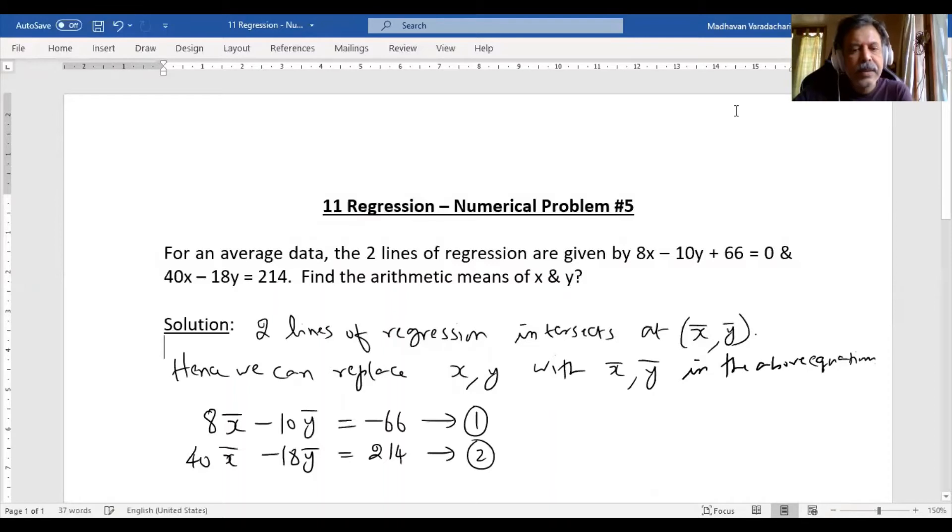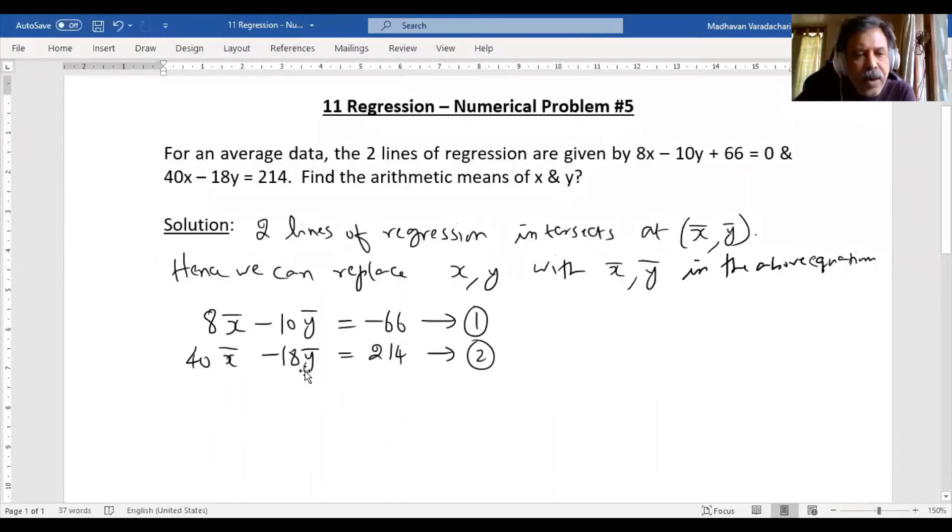Now if I have to solve, I notice if I make this 8 coefficient as 40, it is possible because if I multiply by 5, this will become 40. So I will multiply the first equation by 5.